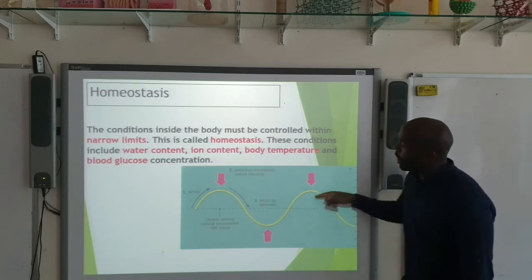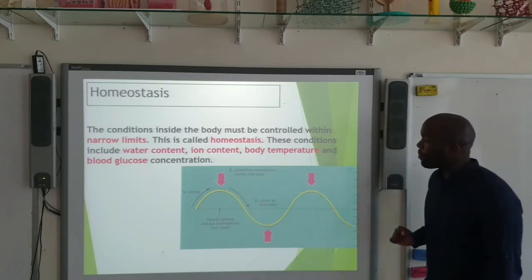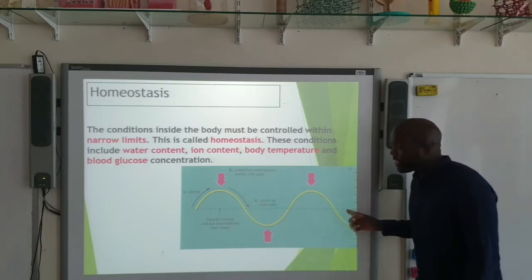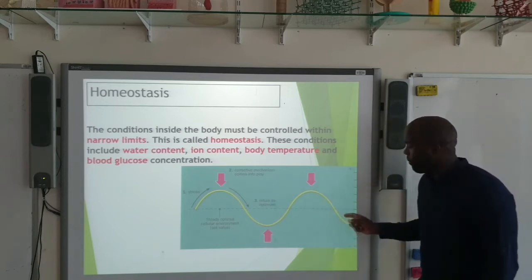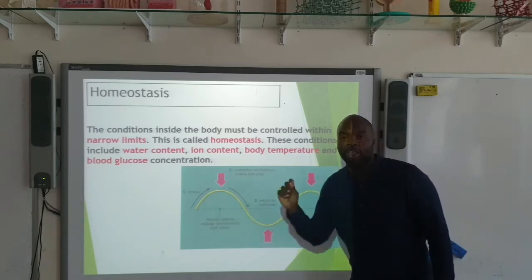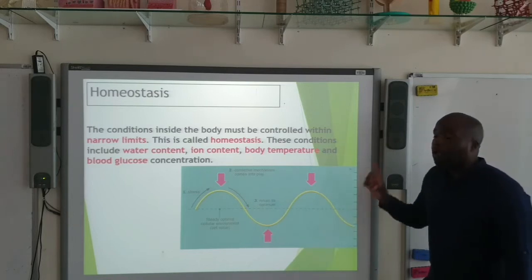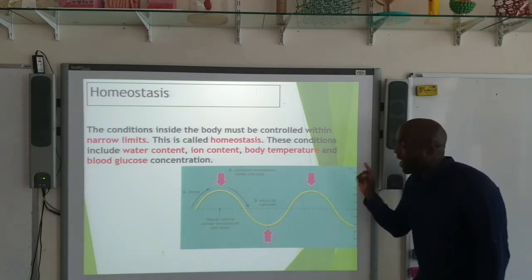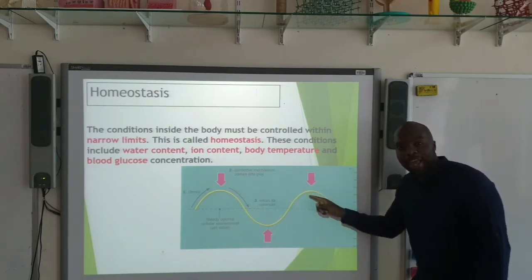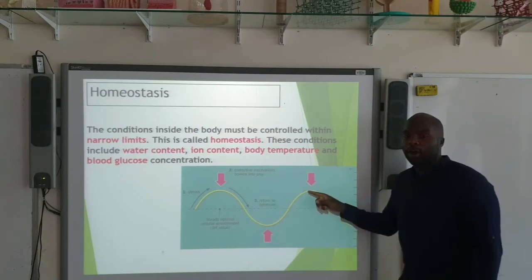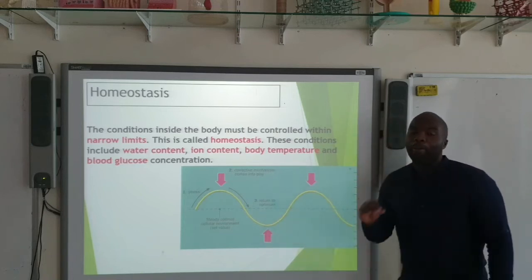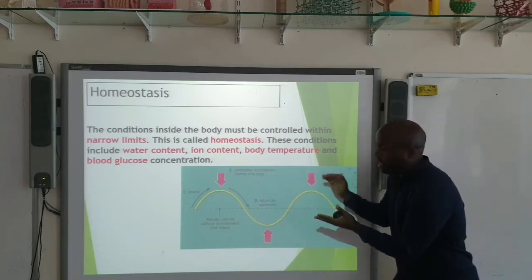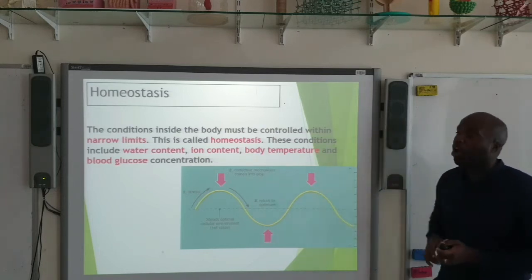For example, if you look at this chart, imagine this baseline represents body temperature — a constant body temperature of 37 degrees Celsius. The body temperature must be kept within a narrow limit. This peak here could be 37.5 degrees Celsius, and this trough could be 36.5. We don't want our body temperature to leave this narrow limit. And that is homeostasis.